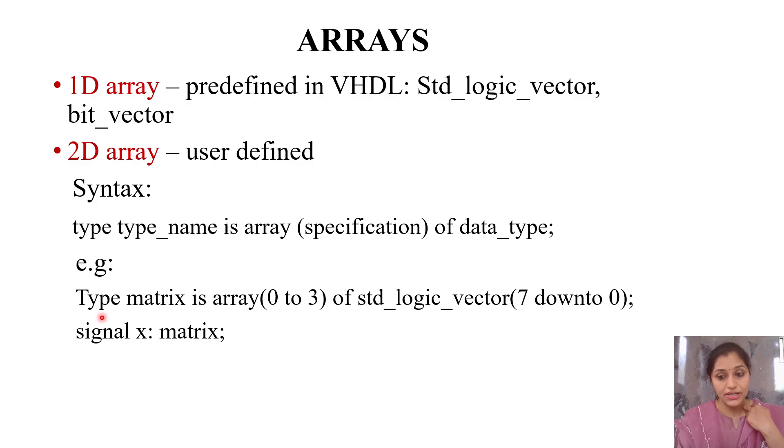This is a 4 by 8 array. Signal x is matrix, meaning x is my matrix with four columns and eight rows. We use two-dimensional arrays to define memories like FIFO memory or RAMs. The array will have locations in memory—suppose 16 locations—and each location can store 1-bit or 2-bit data as defined.